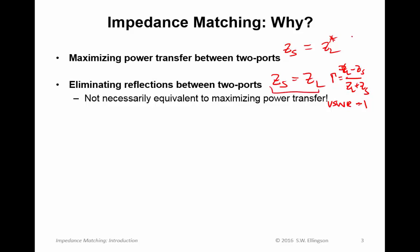By the way, this is the same as saying voltage standing wave ratio equals one. If you want a voltage standing wave ratio of one, then you want to eliminate reflections. You want Z_S equals Z_L. If you want to maximize power transfer, then you want to do this. And these are two different things, but they're both considered impedance matching. In both cases, we're trying to specify an impedance and then achieve it.